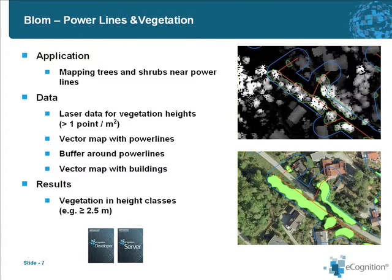One example is power lines, done by our customer Blom in Norway. They look at mapping trees or shrubs which are close to power lines and encroaching on the power line. The data used is a LIDAR point cloud with more than one point per square meter, along with vector maps identifying the power lines. They buffer these vector maps and look in the vicinity of power lines to extract encroaching vegetation in different elevation classes. The software used is eCognition Developer and eCognition Server.